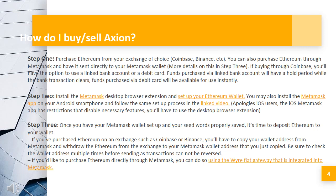How do I buy and sell Axion? Step 1: Purchase Ethereum from your exchange of choice — Coinbase, Binance, etc. You can also purchase Ethereum through Metamask and have it sent directly to your Metamask wallet. More details on this in Step 3.